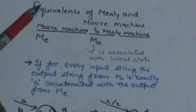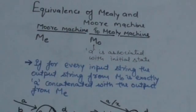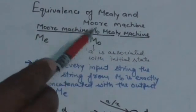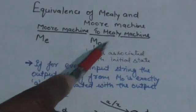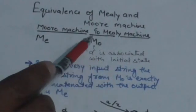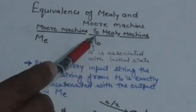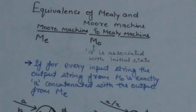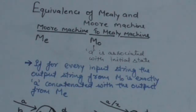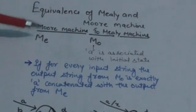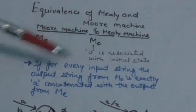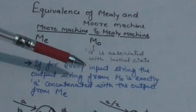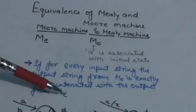Suppose there are two machines: this is a Mealy Machine ME and this is a Moore Machine MO, and suppose output symbol A is associated with its initial state. In Moore Machine, output symbols are associated with states, and in Mealy Machine, outputs are associated with transitions. Then these two machines will be equivalent if, for every input string, the output string from the Moore Machine is exactly A concatenated with the output from Mealy Machine ME.